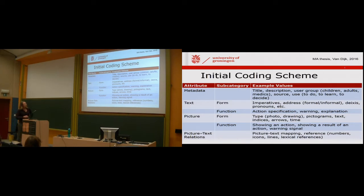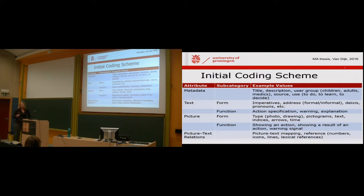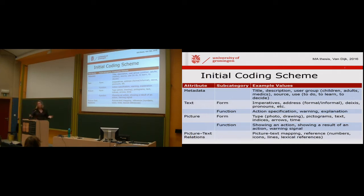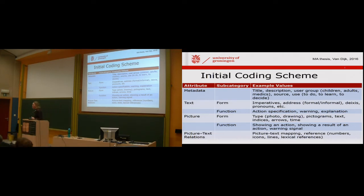For text function, we look at how is the action specified, are there any warnings or explanations. These things are more difficult — you can imagine the form features can be done automatically with computational linguistic methods, but functions need human eyes and brains. For pictures: is it a photograph, a drawing, are there pictographs, text, indices, arrows? And function — is the picture showing an action, a result of an action, a warning? And the relations: picture-text mappings, reference numbers, items, lines. That's 42 categories for the whole document.